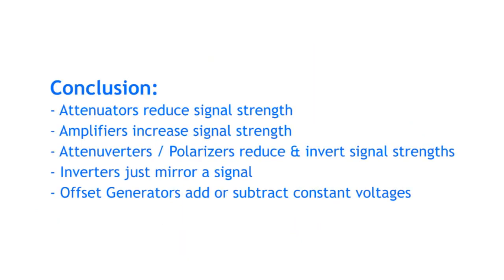Conclusion. Attenuators reduce a signal's strength. Amplifiers increase a signal's strength. Attenuverters or polarizers reduce and invert a signal's strength.